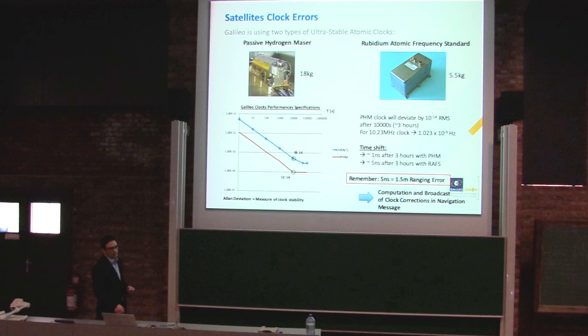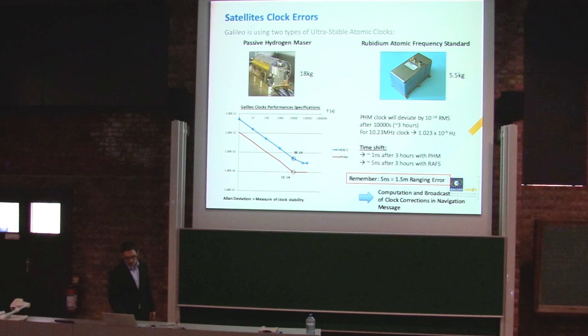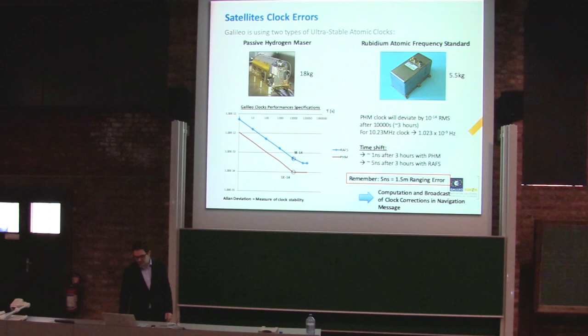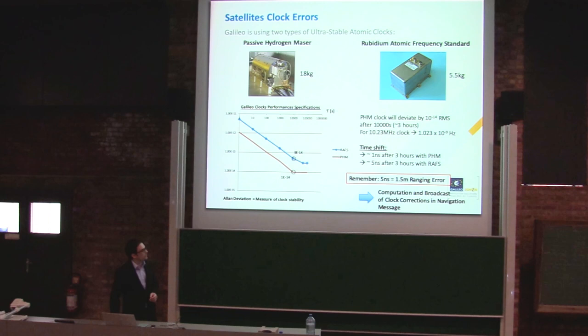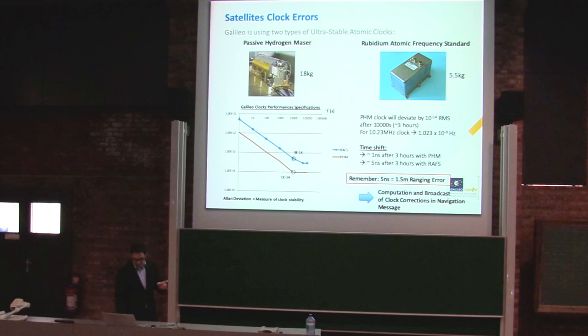Galileo carries two passive hydrogen masers (PHM) and two rubidium atomic frequency standards per satellite — four clocks in total — providing extremely high timing stability. The PHM drifts approximately one nanosecond every three hours. Since one nanosecond corresponds to 30 centimeters of position error, accurate timing is critical in GNSS.